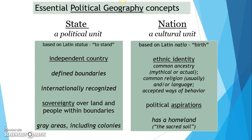States are political units — they have governments. States share a few key characteristics. One is that they have defined boundaries, meaning you can look at a map and draw lines around where they are. Two is that they're internationally recognized, meaning other countries acknowledge you as a state. Three is that they've got sovereignty over the land and people within their boundaries — that idea of control, the ability to make laws and rules. A fourth characteristic is that you have to have a defined population.